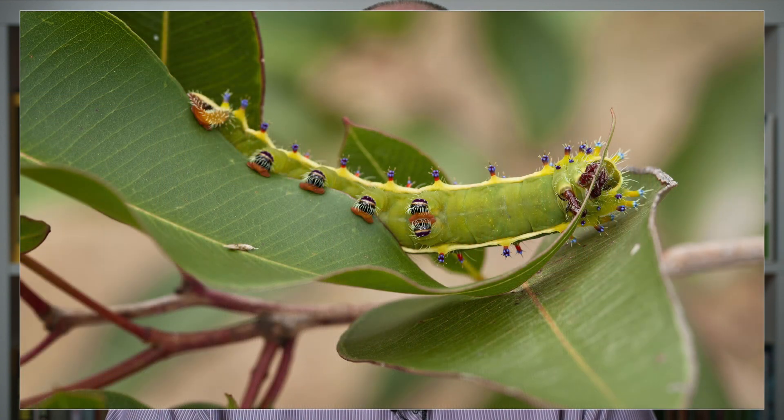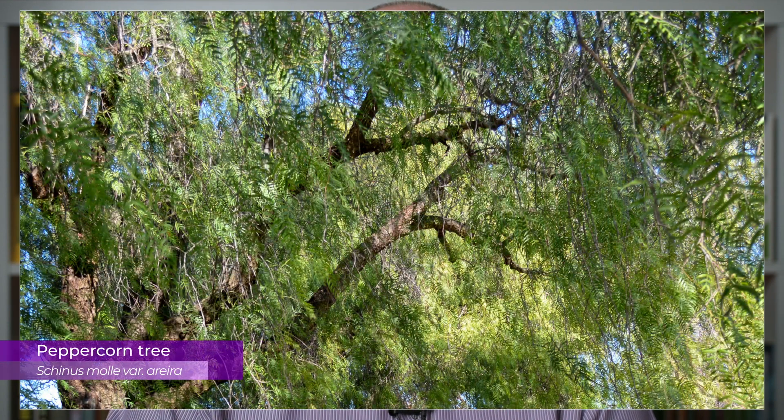The larvae of both species feed on the foliage of various gum trees, hence their common name, gum moths. They also feed on a couple of introduced trees, most notably the peppercorn tree. Despite their spectacular colors and large size, these larvae can be quite difficult to see amongst dense gum tree foliage.